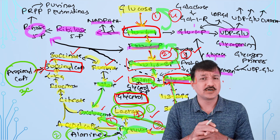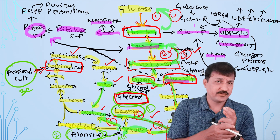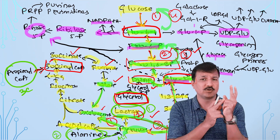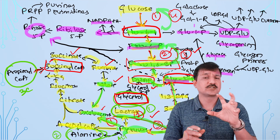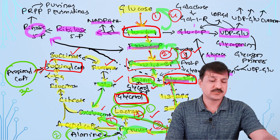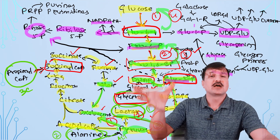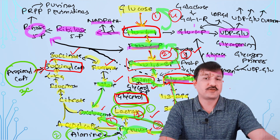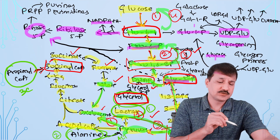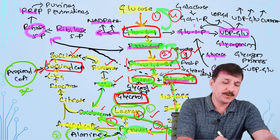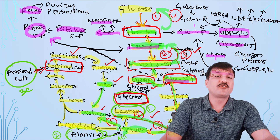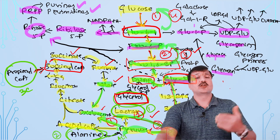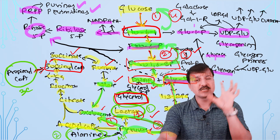Intermediates in the non-oxidative phase include sedoheptulose-7-phosphate, xylulose-5-phosphate, and erythrose-4-phosphate. The non-oxidative phase allows glycolytic intermediates fructose-6-phosphate and glyceraldehyde-3-phosphate to be converted back into ribose-5-phosphate. Ribose-5-phosphate is converted into PRPP (phosphoribosyl pyrophosphate), which promotes purine and pyrimidine synthesis for nucleotide biosynthesis. A disease associated with this pathway is glucose-6-phosphate dehydrogenase deficiency.